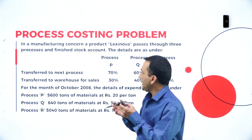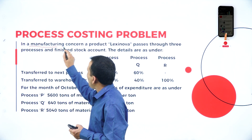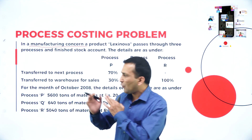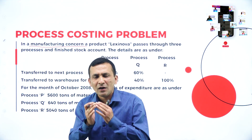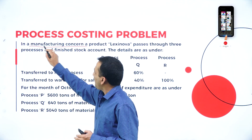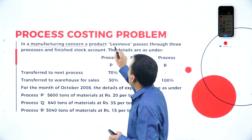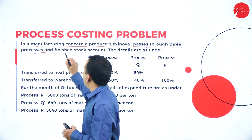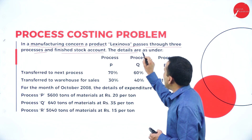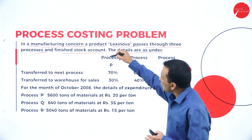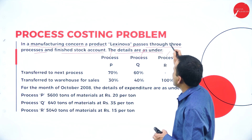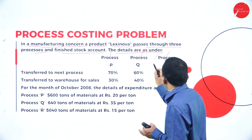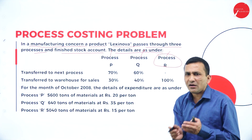Here there is one question: in a manufacturing concern — related to process costing based on percentage — a product called Lexinova passes through three processes and a finished stock account. The details are as under. There are three processes: Process P, Process Q, and Process R. The last process is Process R, from which we find the finished stock.